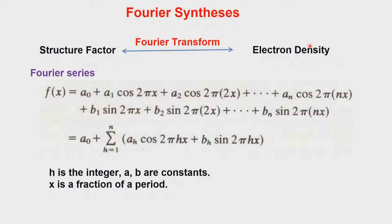What is Fourier series? First let us learn something about the Fourier series. This is a very general expression which we have written here. It can be f(x) equals a0 plus a1 cosine(2πx) plus a2 cosine(2π·2x). We are now writing the cosine part of f(x) and then the sine part with coefficients b1, b2, b3, and bn. So a1, a2, a3 are associated with the cosine, the real part of the function.